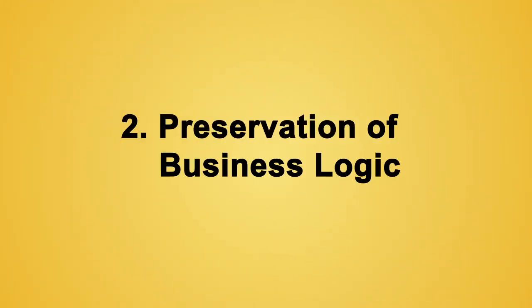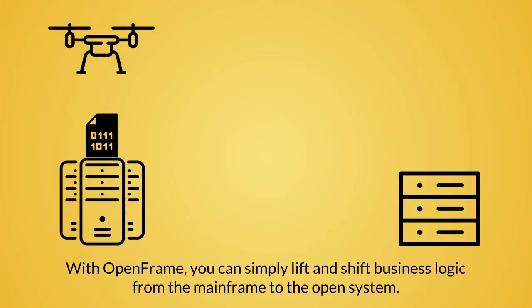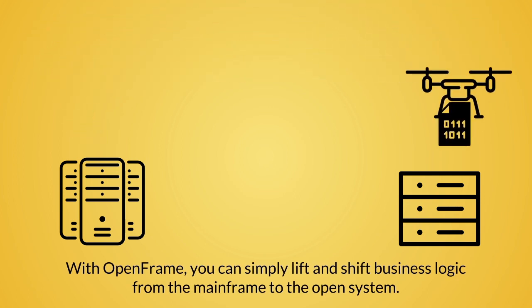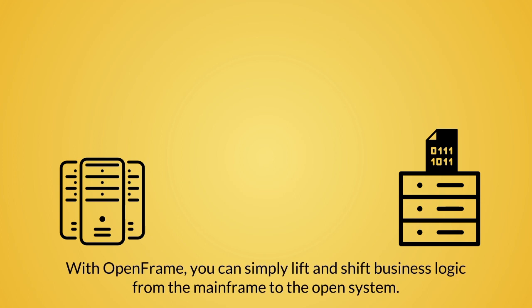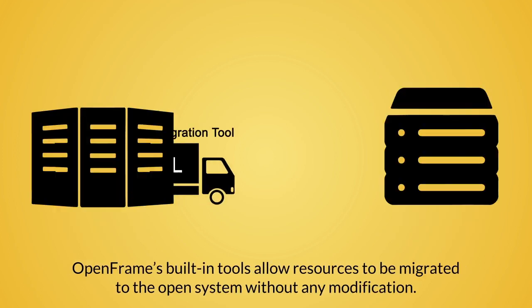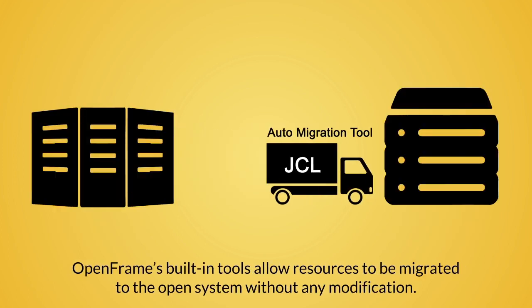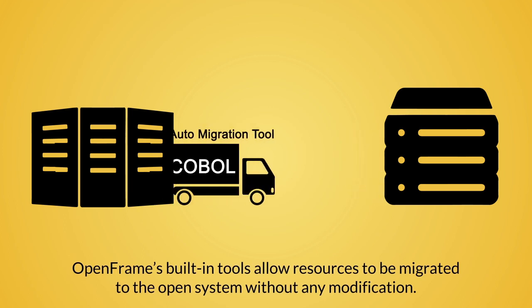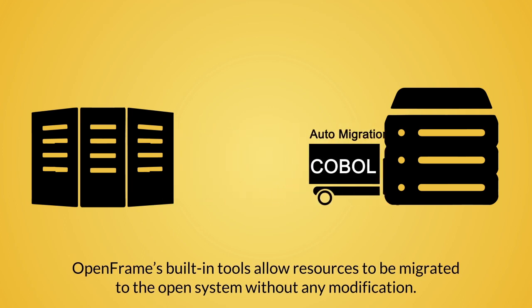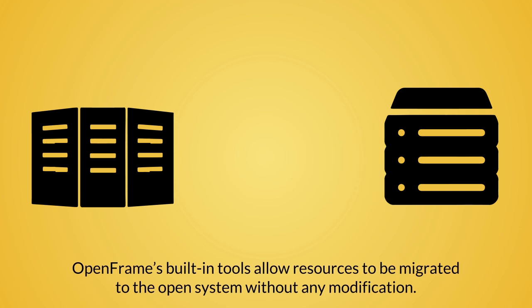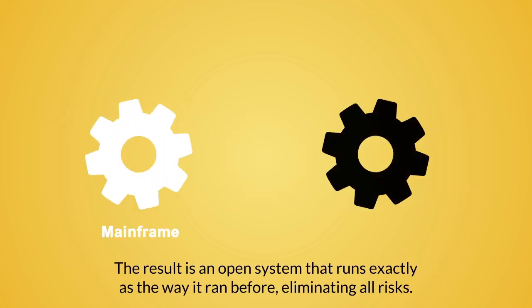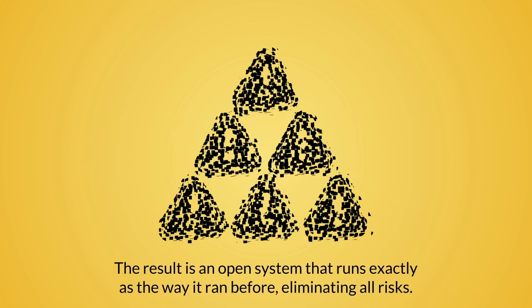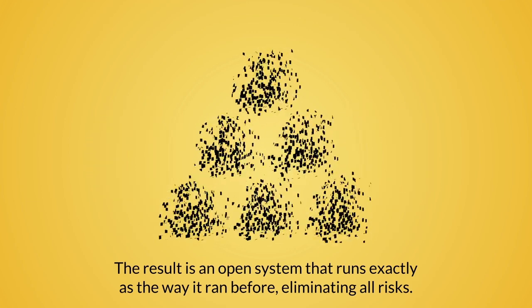Preservation of business logic. With OpenFrame, you can simply lift and shift business logic from the mainframe to the open system. This is made possible with OpenFrame's built-in tools, which allow mainframe resources such as JCL and COBOL to be migrated to the open system without any modification. The result is an open system that runs exactly as it ran before, eliminating all risks associated with migrating away from the mainframe.